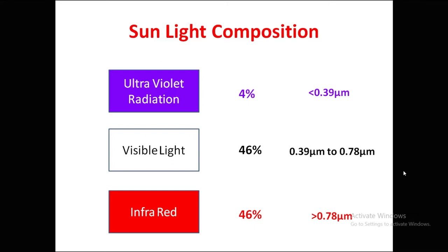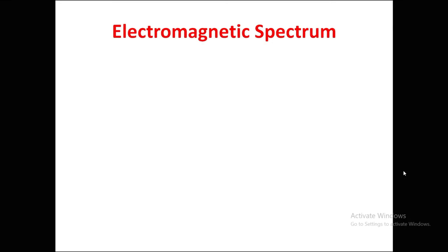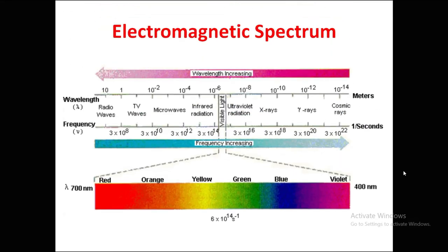Next, let us look at the electromagnetic spectrum. The spectrum is divided based on two components: wavelength and frequency. Radio waves span wavelengths from 10 down to 1 meter, with frequencies up to 3×10⁸ Hz. TV waves range from 1 meter to 10⁻² meters, with frequencies from 3×10⁸ to 3×10¹⁰ Hz.